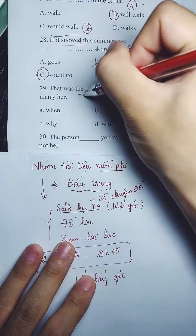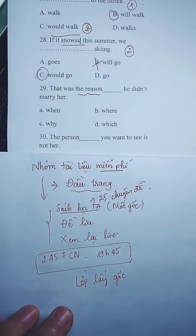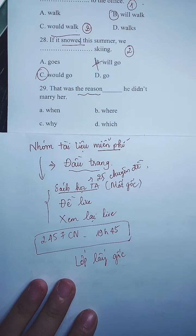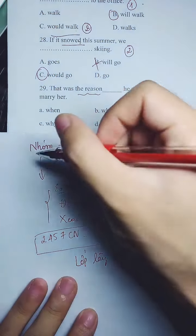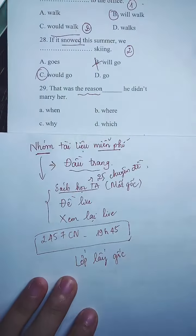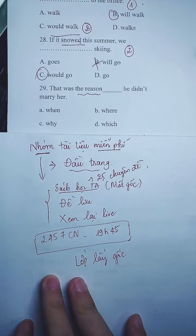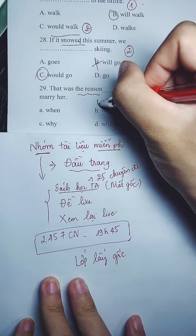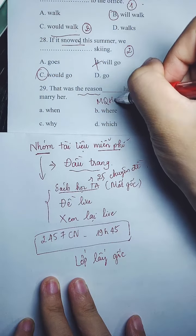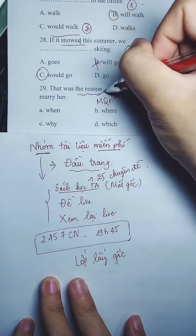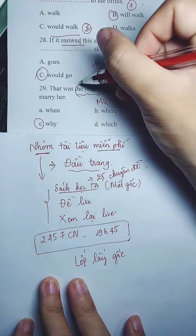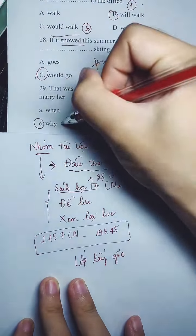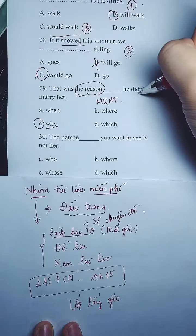Câu 29 — chúng ta có 'The reason'. Lý do tại sao anh ta lại không cưới cô ta. Nhớ cho cô: ở đây chúng ta sẽ có trạng từ quan hệ. Câu này thuộc chuyên đề mệnh đề quan hệ. Trạng từ quan hệ chỉ lý do thì chọn 'why'. 'Why' chính là 'lý do tại sao' anh ta không cưới cô ta.